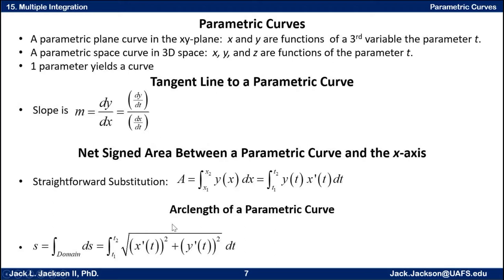If we want to find the arc length of a parametric curve, we use our arc length parameter s, which is the integral of that arc length differential ds. The ds is the square root of x prime of T squared plus y prime of T squared times dt. So we just integrate that from T1 to T2. Let's look at an example of each of these things.